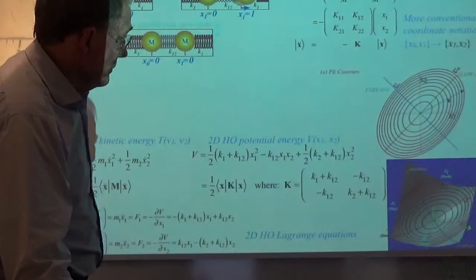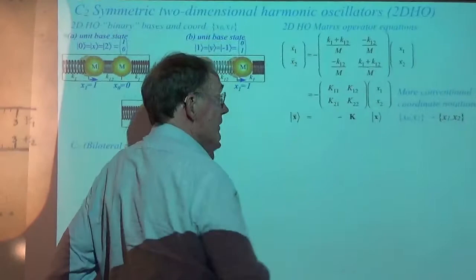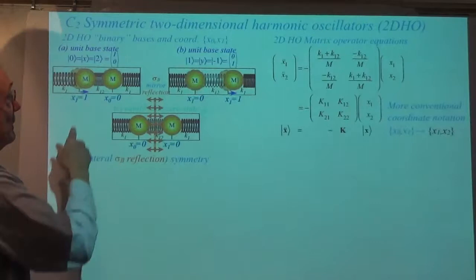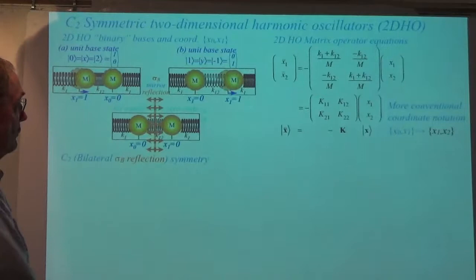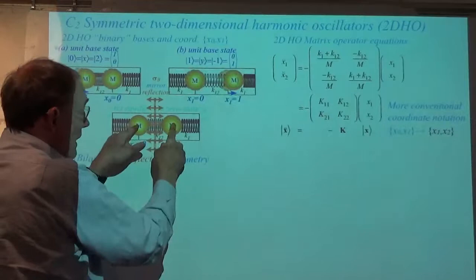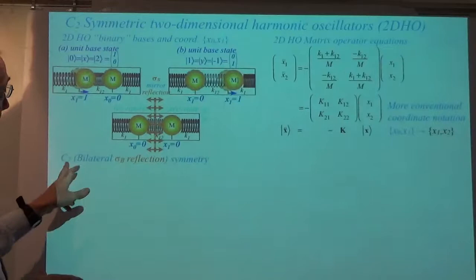Now, the question is how to get solutions by symmetry analysis. Obviously it's going to be nice if we can find a basis that is the eigenbasis of that matrix. So we're going to go for that just using the reflection operator. The mirror reflection operator has to be defined in the basis we're working with — the xy, or x0, x1 basis. The idea is that if we make these two spring constants equal and the two masses equal, then a mirror reflection of the system does not change its properties.